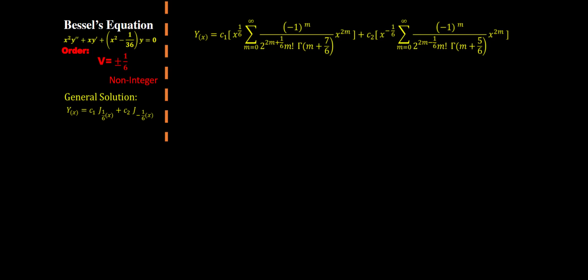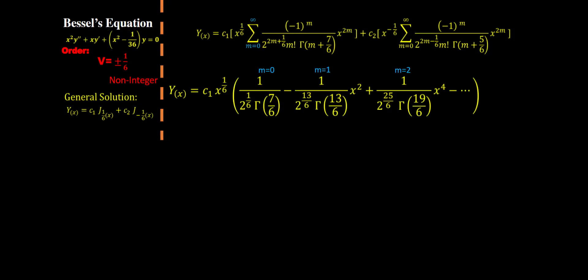Now for the next step we need to expand our two sums. In both cases we have m going from zero to infinity. Clearly we won't be able to write out every single term of this sum, but we're gonna write out the first three.